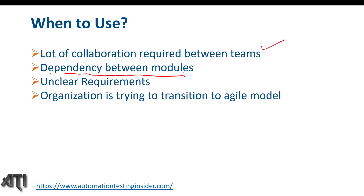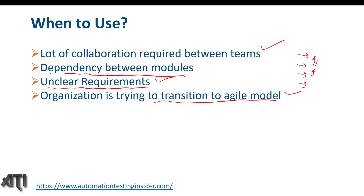Another scenario is dependency between the modules. Let's say for any particular product we have different modules and they are dependent on each other — then we should go for hybrid model. Also, when there are unclear requirements: if a client is new to the market and not sure about their requirements, then we go for prototype model. Similarly here, when we have unclear requirements in hybrid model, we generally combine with prototype model, as shown in the examples — spiral with prototype, and V&V model with prototype.